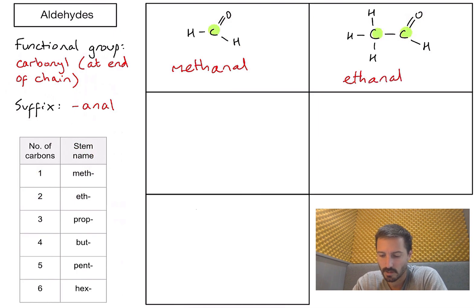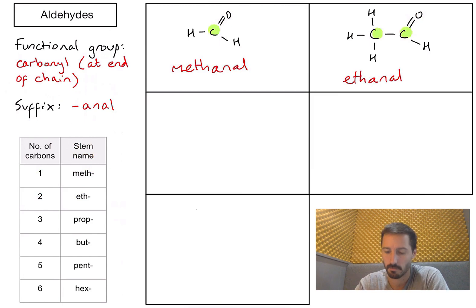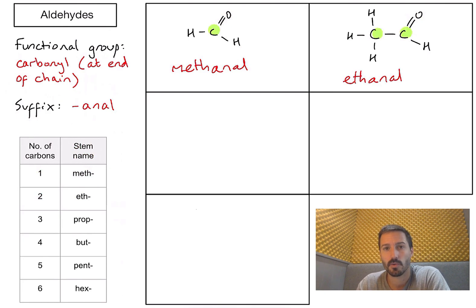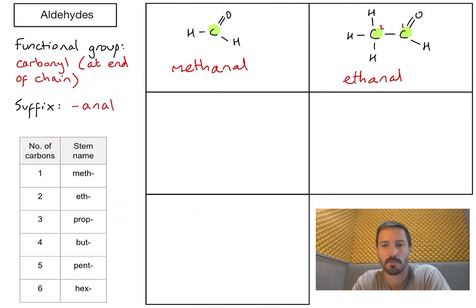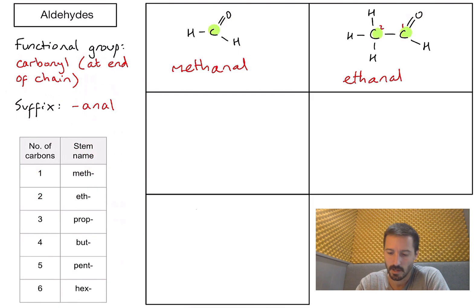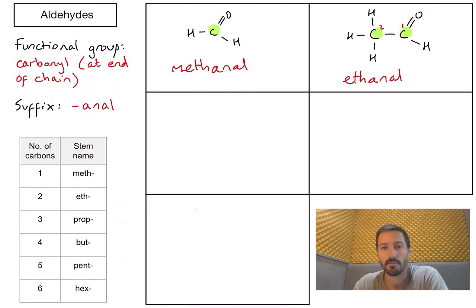Unlike some naming conventions, we don't need to put any numbers for aldehydes. Because the carbonyl functional group is always at the end of the chain, it's always going to be on the first carbon — so technically it would always be ethan-1-al and so on. Since it's always on that first carbon, we don't need to write any numbers.